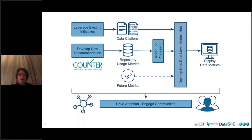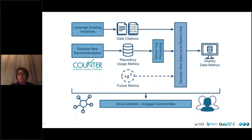The Make Data Count project leverages existing initiatives such as data citations and develops new recommendations such as the COUNTER Code of Practice. These feed into a data-level metrics hub hosted by DataCite. If you participate, you push your server logs into the data metrics hub for processing. We then drive engagement across all communities, and using the data-level metrics hub you're able to display data metrics. When Daniela goes into her presentation, this will be a little bit clearer — but this is really a schematic of how all the pieces fit together.